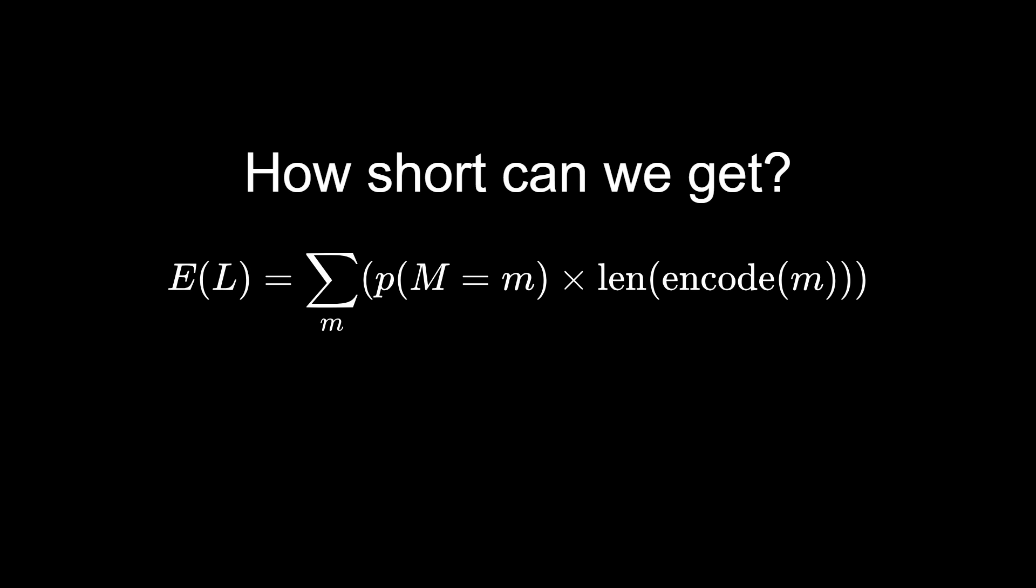This raises a natural question. What algorithm gives us the smallest possible average code length for a message? Here average code length has a concrete definition. For a given coding system, the average code length is the expected value of code length, the sum of the code length for each message, weighted by the probability of seeing that message. Now this doesn't make sense with infinite messages, so we'll just consider messages that are n symbols long, and see what happens as n approaches infinity.